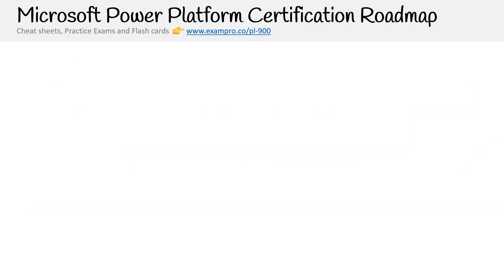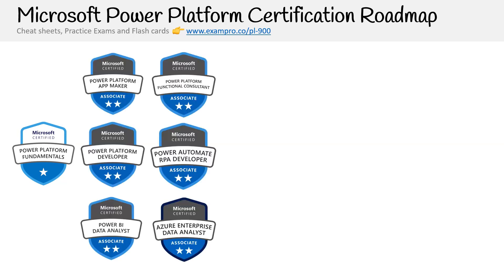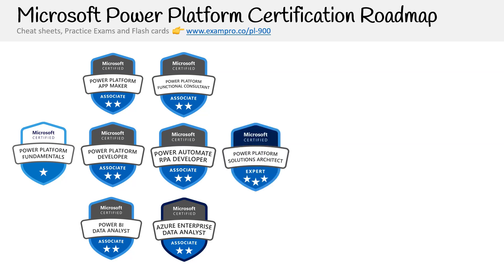Now let's take a look at the Microsoft Power Platform certification roadmap to see where we would go after the Power Platform Fundamentals and what kind of roles would be associated with those certifications. At the start, you get your Microsoft Power Platform Fundamentals, which is at the fundamental level. After that, we have associate level certifications such as the Power Platform App Maker, Power Platform Functional Consultant, and Power Platform Developer. And we have an expert level certification called the Power Platform Solutions Architect.